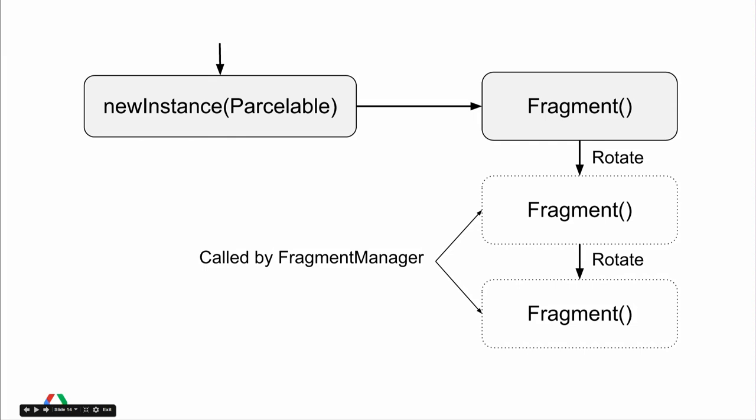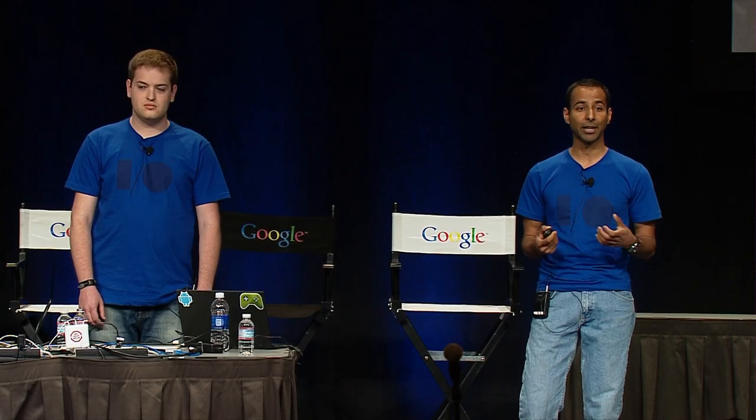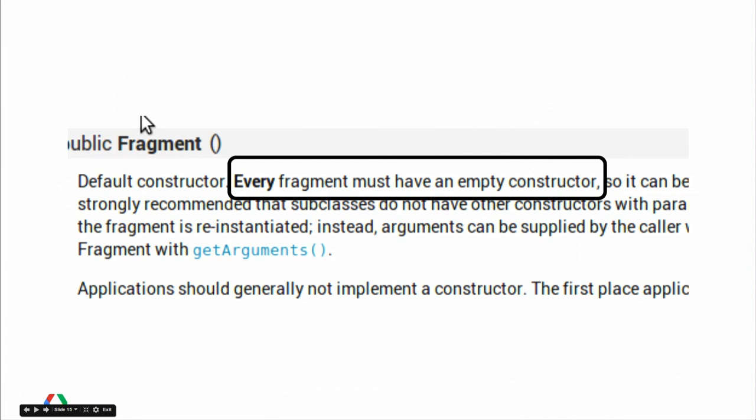Let's talk about the empty constructor. Your interface to creating a fragment is the newInstance method, which calls the empty constructor for you. When you rotate the device, the fragment manager will call the empty constructor on your behalf and populate it with the arguments you set earlier. The framework even says so in the docs — every fragment needs an empty constructor. Once the arguments are set, they'll stay with the fragment. Leverage it; use it to your benefit.